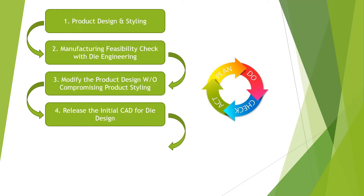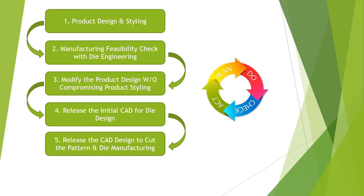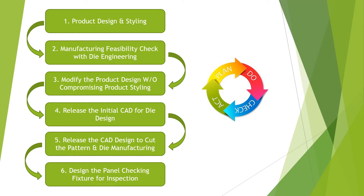From the initial CAD, the engineering team starts die design, and in parallel, PD starts discussion with body, paint, and TCF. Once those inputs are also taken, we get the CAD design to cut the pattern and start die manufacturing. Once die manufacturing starts, we go for inspection of the panels through panel checking fixture design. The entire process follows the PDCA cycle, because every time there is feedback, we take it into consideration and modify our die across multiple phases.